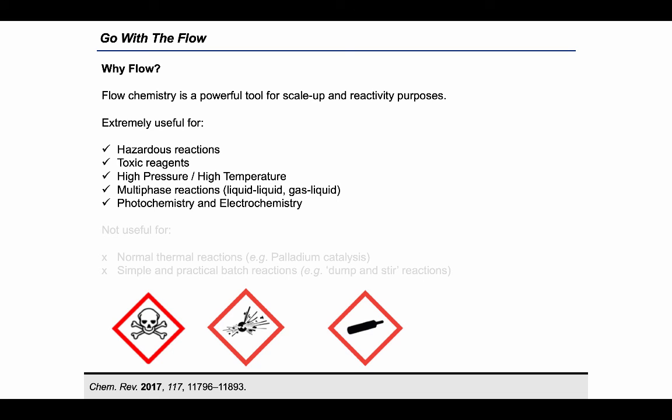Based on the previously listed advantages and the compelling examples reported, it appears clear now that only some specific reactions can benefit from the use of flow reactors. Namely, reactions involving hazardous or toxic reagents are safer if carried out in flow, as well as transformations that require high pressure or temperature.